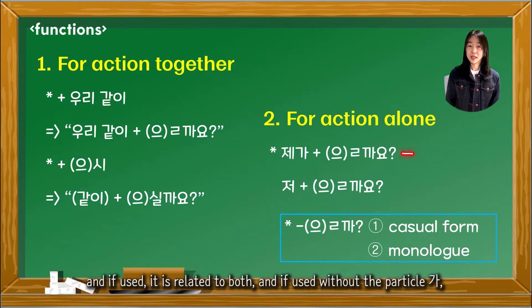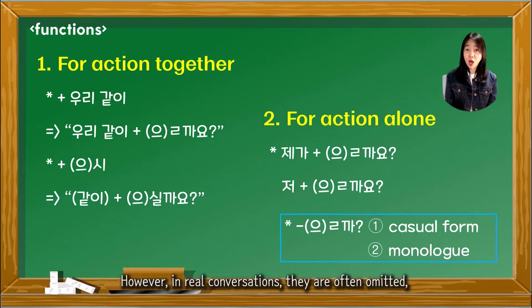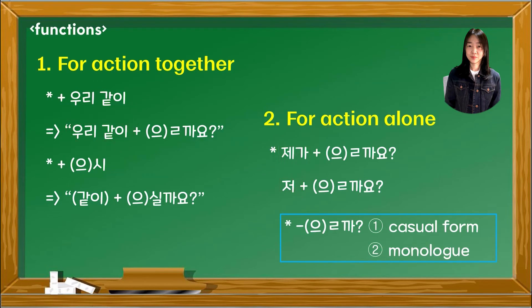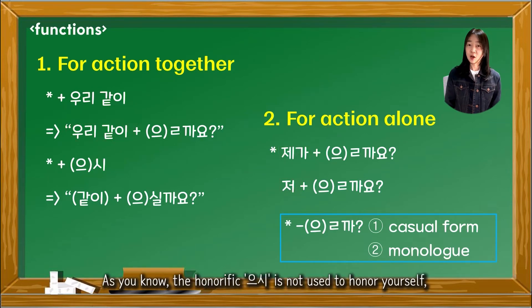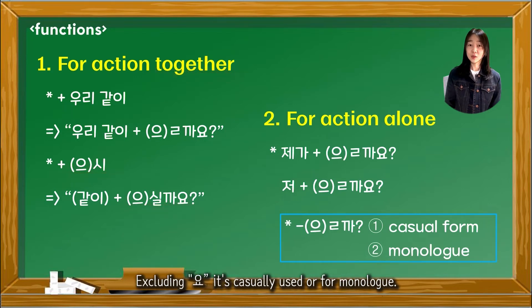If 제가 is used, it relates to both functions. If used without the particle 가, the original form 저 is mostly about the speaker's own situation. However, in real conversations, they are often omitted, so contextual understanding is needed. As you know, the honorific 으시 is not used to honor yourself, so 으시 can be inserted only for the first use. Excluding 요, it's casually used or for monologue.